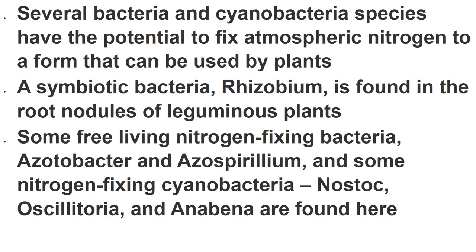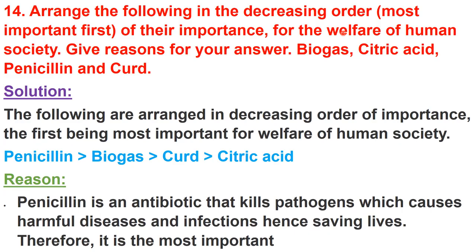The next question: arrange the following in decreasing order of importance for the welfare of human society — biogas, citric acid, penicillin, and curd. Penicillin is most important because it is an antibiotic used as a medicine to kill pathogens. Penicillin kills pathogens which cause harmful diseases and infections, hence saving lives. Second is biogas, third is curd, and fourth is citric acid.